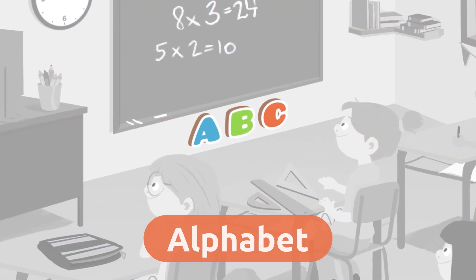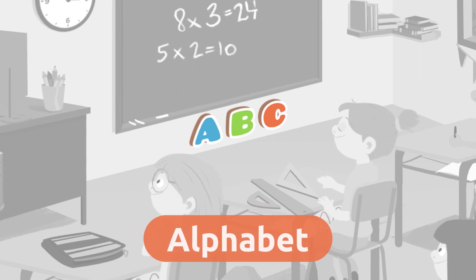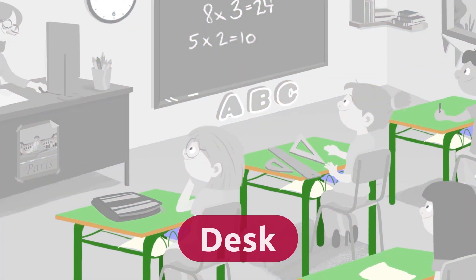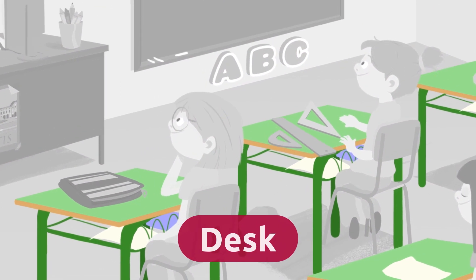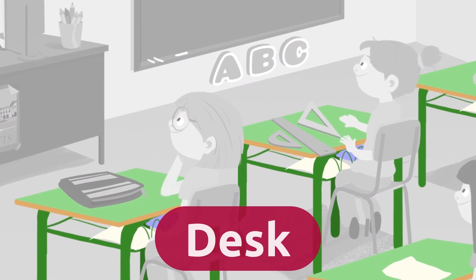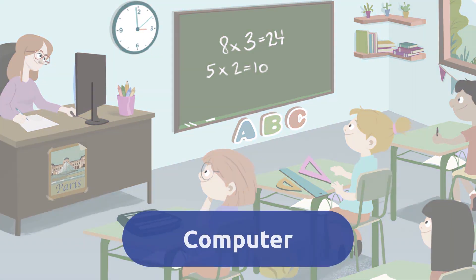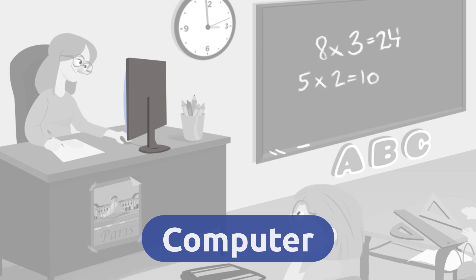The alphabet is a set of letters in a fixed order: A, B, C, D, E. Alphabet. The desk is the table where pupils study and do their work. Desk.